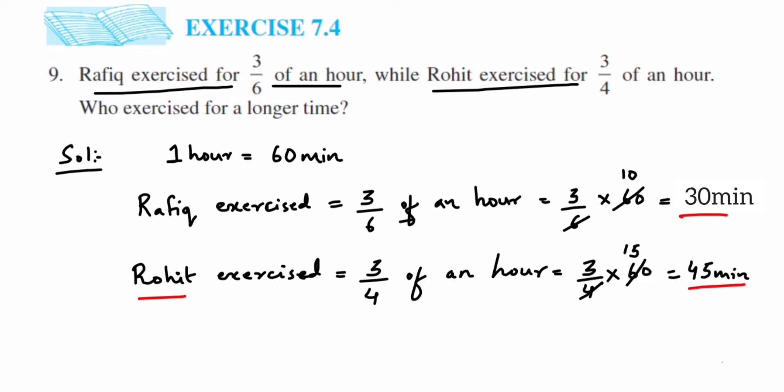In case of Rohit, 45 minutes, and Rafiq got 30 minutes. So if you compare here, we know that 45 minutes is more than 30 minutes.